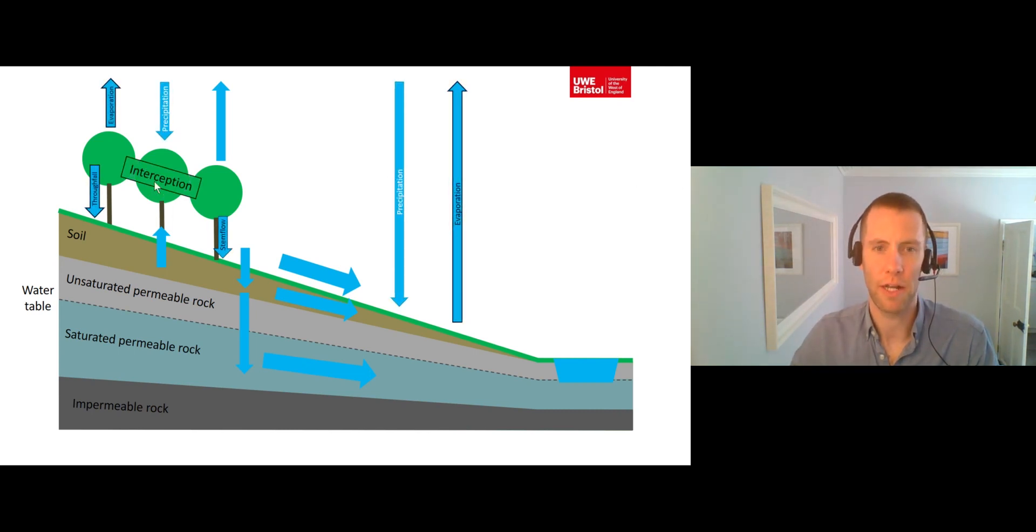Interception is when a layer of vegetation prevents precipitation falling directly onto the hill slope surface. After being intercepted, the water has to travel via either throughfall or stem flow to reach the hill slope surface.